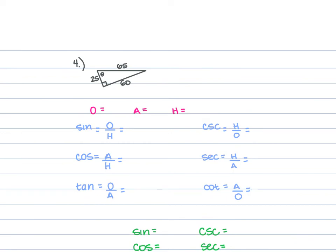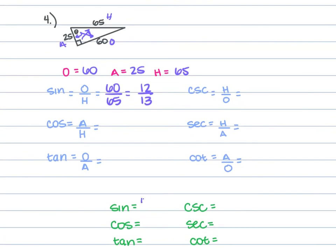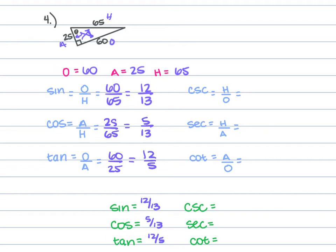For problem 4, we're given side lengths of 25, 65, and 60. Hypotenuse is 65, adjacent is 25, opposite is 60. Sine is 60 over 65, which simplifies to 12 over 13. Cosine is 25 over 65, which simplifies to 5 over 13. Tangent is 60 over 25, which simplifies to 12 over 5. Cosecant is 13 over 12, secant is 13 over 5, and cotangent is 5 over 12.